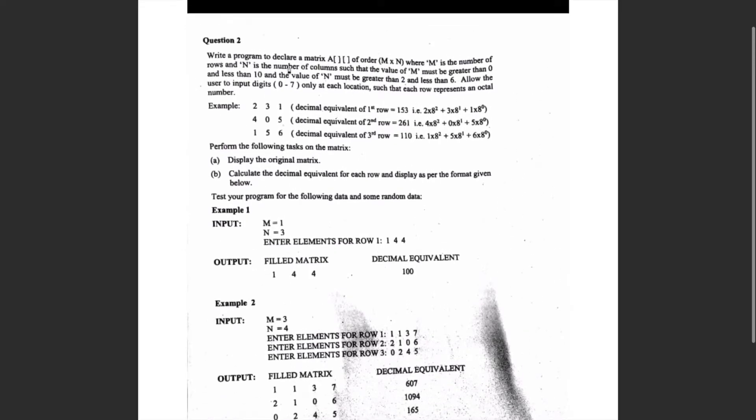Test your program for the following data. Example 1: m=1, n=3. m is between 0 and 10, and n=3 is between 2 and 6, so both are valid. Enter elements for row 1 — input 1 4 4. The decimal equivalent is 100: 1×8² = 64, 4×8¹ = 32, and 4×8⁰ = 4. So 64+32+4 = 100, which is correct.